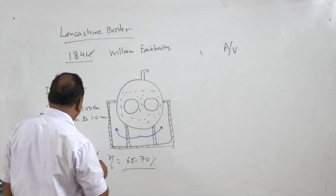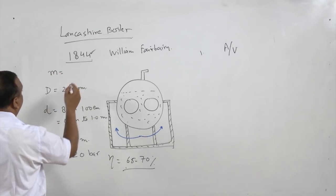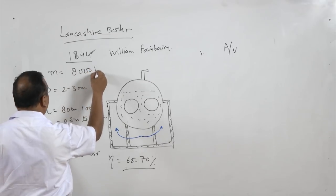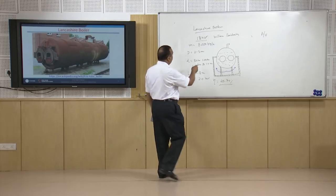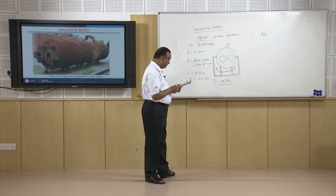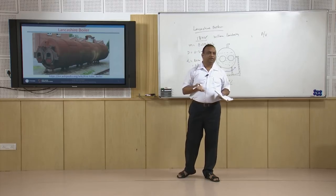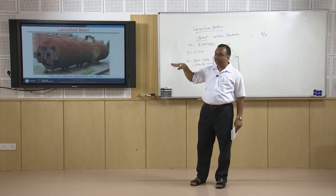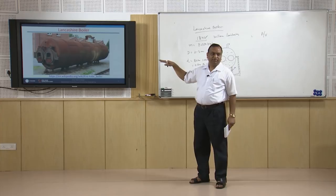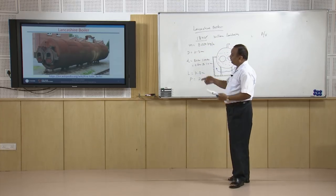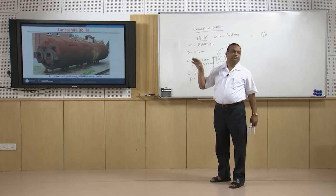The steam generation rate is also important in the boiler. Steam generation rate is approximately 8000 kg per hour. So 8000 kg per hour of steam can be generated in this boiler at 20 bar pressure. It is a stationary boiler because brick work has to be done. Classification-wise it is a stationary, horizontal boiler because the shell is in the horizontal direction.